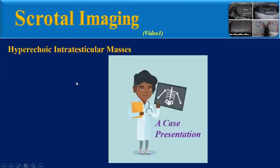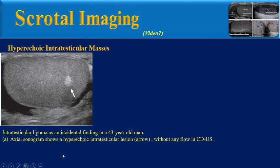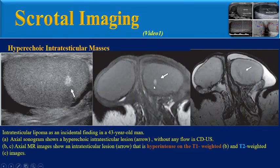Here is another teaching case presentation. This image shows an intratesticular lipoma as an incidental finding in a 43-year-old man. Axial sonography shows a hyperechoic intratesticular lesion without any flow on color Doppler ultrasound. On MR imaging, it shows high signal intensity on T1 and T2, which is consistent with subcutaneous fat signal intensity.